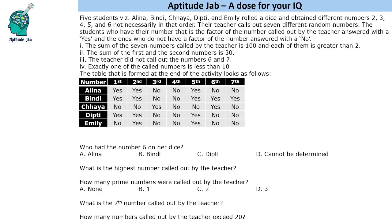Welcome to Aptitude. The problem says there are five students A, B, C, D who rolled a dice and obtained different numbers — two, three, four, five, six — not necessarily in that order. The teacher calls out seven different random numbers. Students whose number is a factor of the number called out answer 'yes', and those who don't answer 'no'. For example, if the teacher calls out 15, then three will say yes and five will also say yes.